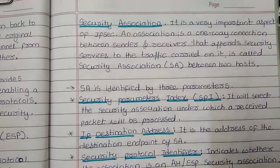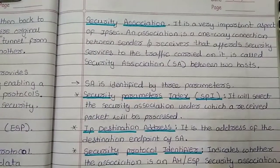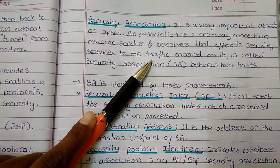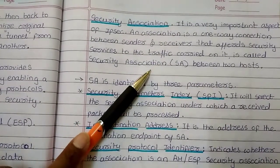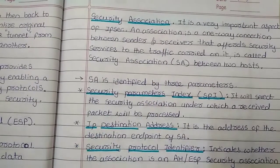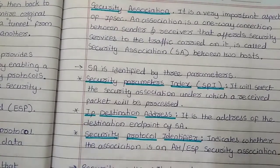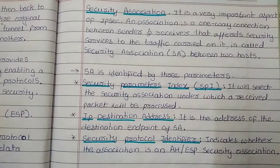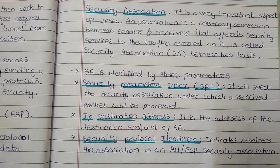The next important point in IP security is the security association. It is a very important aspect where an association is a one-way connection between a sender and receiver, providing security services to the traffic carried on it. A security association has three parameters. The first is the Security Parameter Index, or SPI, which selects the security association under which a received packet will be processed.